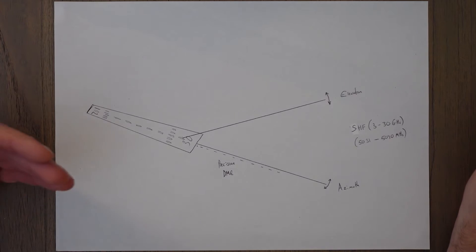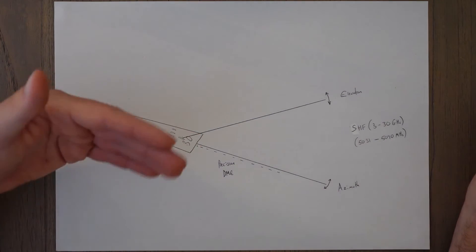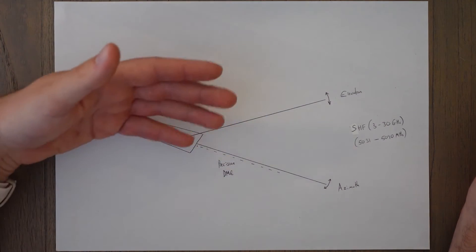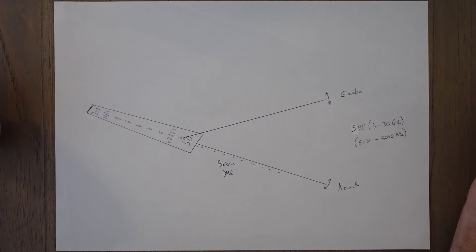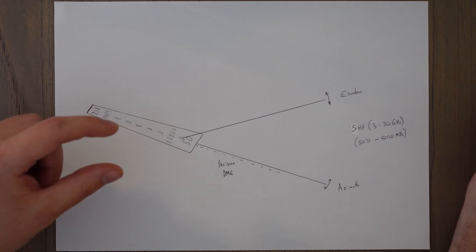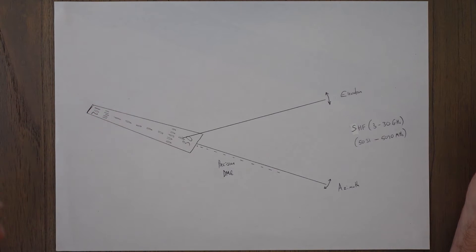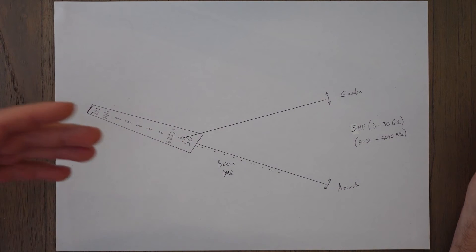It uses two beams, one for the vertical called the elevation and one for the horizontal called the azimuth. Both use the same frequency, but are distinguishable through something called multiplexing. This is where multiple signals are sent out at the same time and are given each a little identifier code so it is obvious where one signal ends and the new one begins.